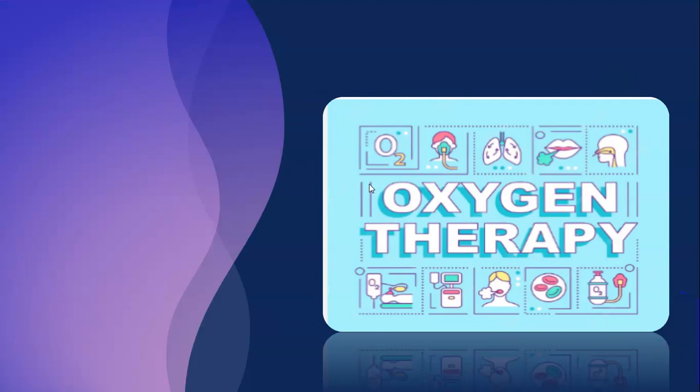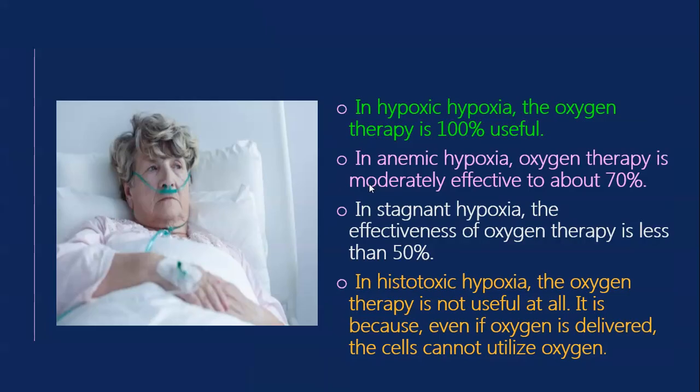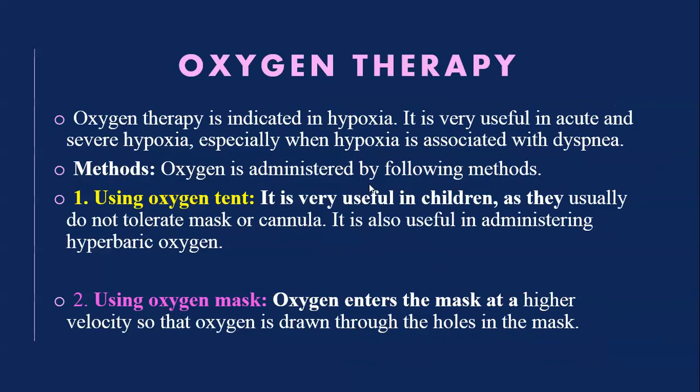Now for treatment of hypoxia: oxygen therapy is 100% useful in hypoxic hypoxia, about 70–75% efficient in anemic hypoxia, less than 50% in stagnant hypoxia, and in histotoxic hypoxia oxygen therapy is not at all useful because the cells cannot utilize the oxygen. Oxygen therapy is especially indicated in acute and severe hypoxia associated with dyspnea.